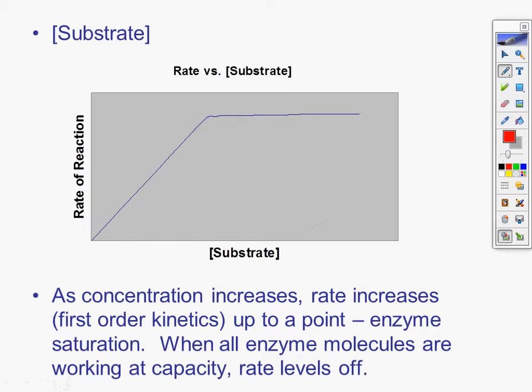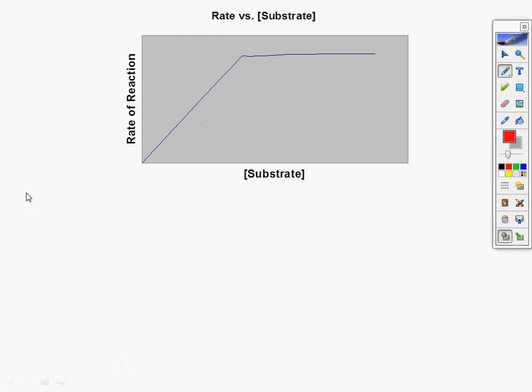Now if you do rate versus the substrate, here's the deal. The rate's going to increase up to a point that the enzyme's going to be saturated. When all the enzyme molecules are working at capacity, the rate levels off. So it depends on how much enzyme is present with how much reaction you can go with the substrate. Depends on how much is present. Great graphs.